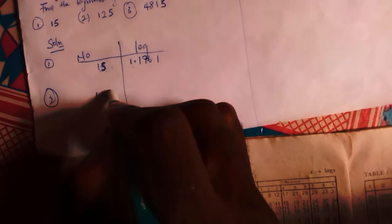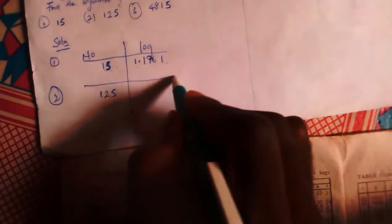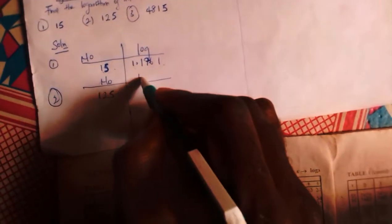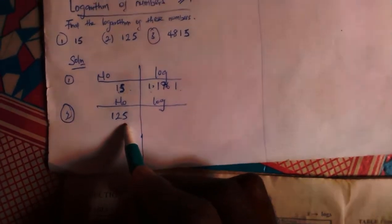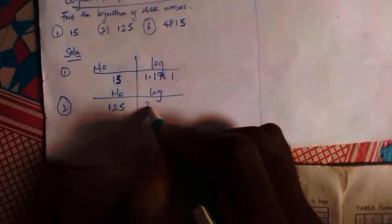Okay, so for number 2, number 2 is 125. The first thing you have to do is draw your number and log table. And after which you will now do what? Well let's do that separate. Number and log. Then the first thing I am going to do is find my characteristic, which is 2 points.